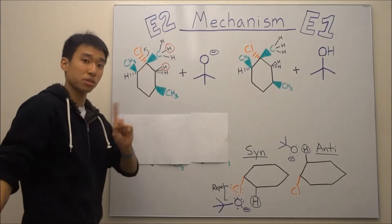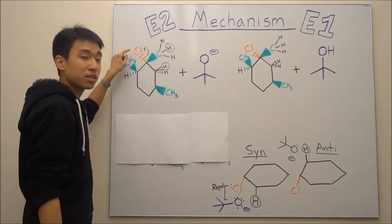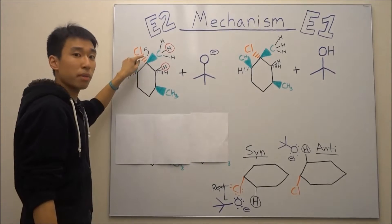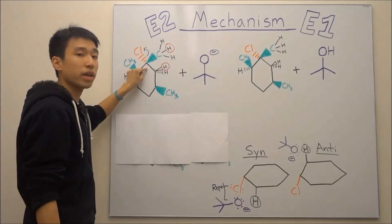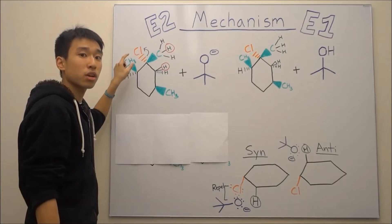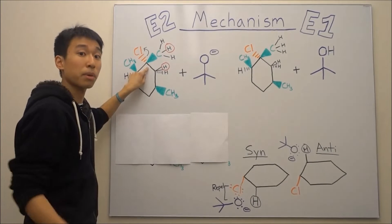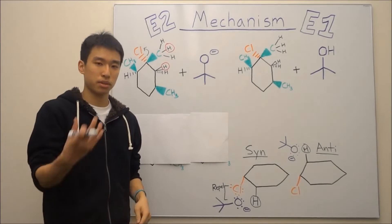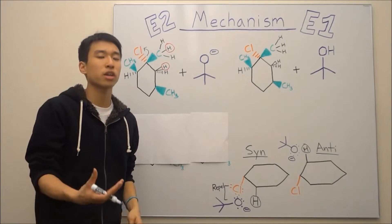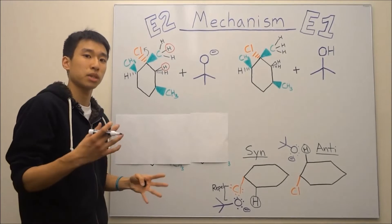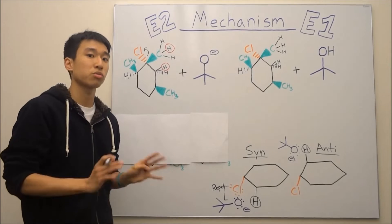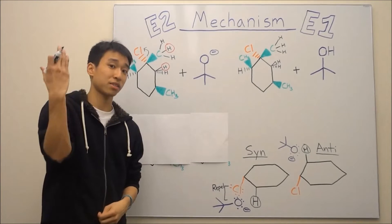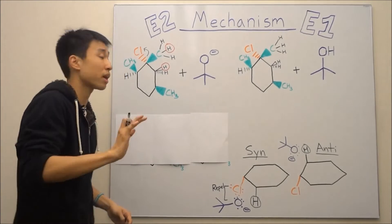However, this is no good, because if the chlorine takes the two electrons in the bond it's sharing with this carbon right here, then this carbon is going to lose electrons and become positive. When carbon gets a positive charge, it becomes a carbocation, which is very, very unstable. So you don't want to do that first.